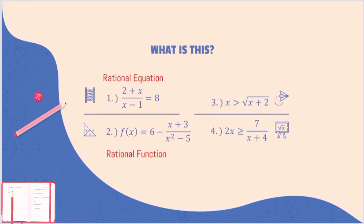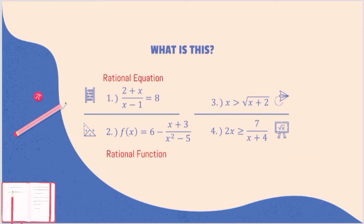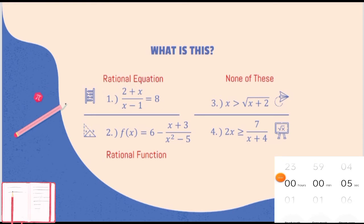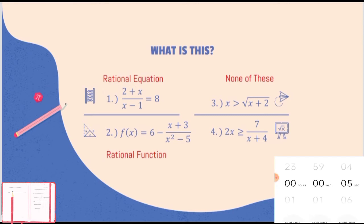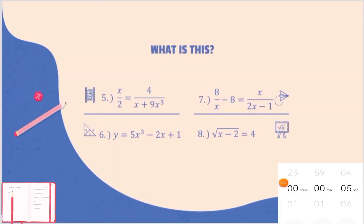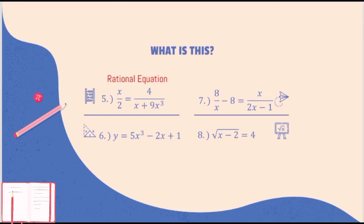Let's proceed to number 3. It is actually none of these, as you can see there is a presence of a radical symbol. How about number 4? This is a rational inequality. How about number 5? This is a rational equation.